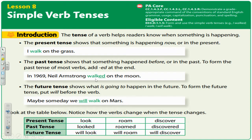Use the past tense verb walked. The future tense shows what is going to happen in the future. To form the future tense, put the word will before the verb. For example, maybe someday we will walk on Mars. Using that keyword someday tells us that this hasn't happened yet, but maybe someday in the future it will.